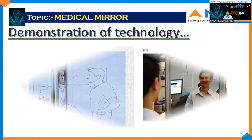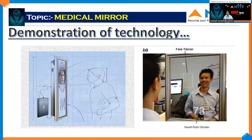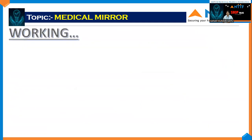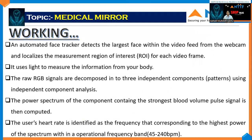The working of the medical mirror: First, an automated face tracker detects the largest face within the video and localizes the region of interest (ROI) for each video frame. It uses light to measure information from our body. The raw RGB signals are decomposed into three independent components using Independent Component Analysis (ICA). The power spectrum of the component containing the strongest blood volume pulse signal is computed. The user's heart rate is identified at the frequency corresponding to the highest power in the spectrum within an operational frequency band of 45 to 243 bpm.